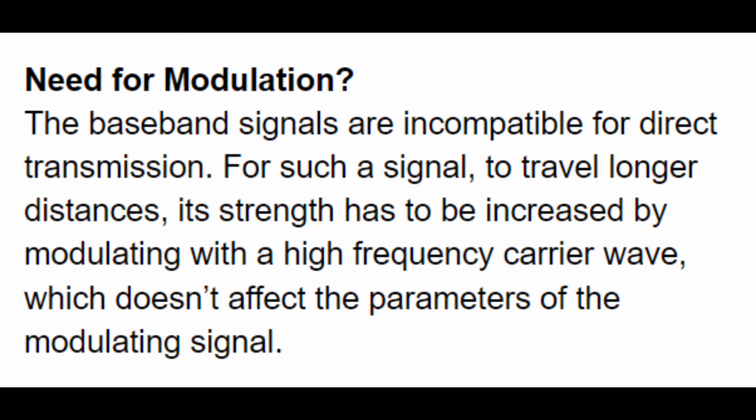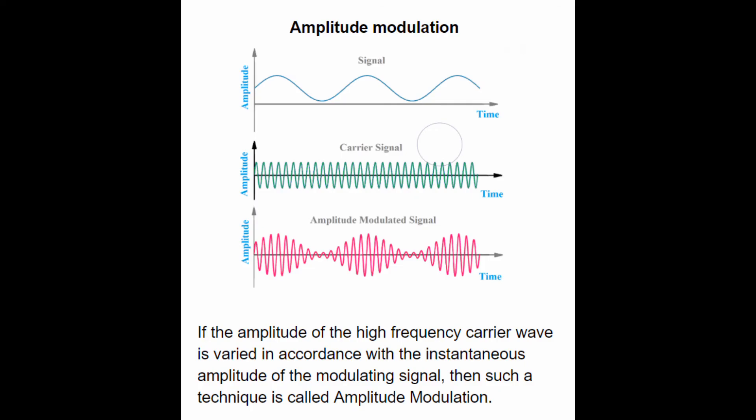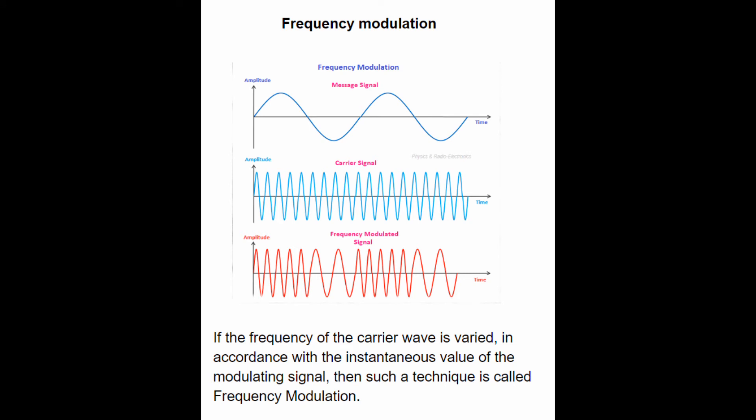There are three types of modulation: amplitude modulation, frequency modulation, and phase modulation. We head on to the first topic, amplitude modulation. If the amplitude of the high frequency carrier wave is varied in accordance with the instantaneous amplitude of the modulating signal, then such a technique is called amplitude modulation.